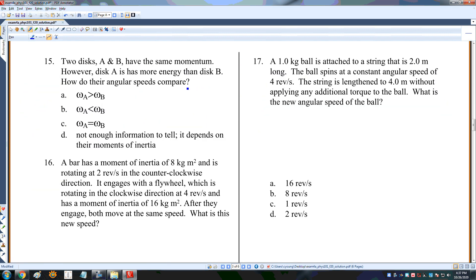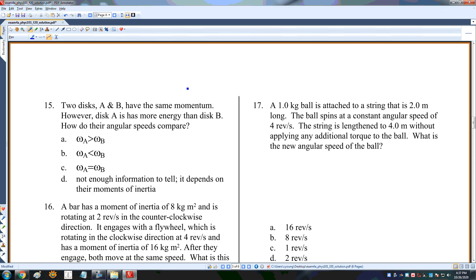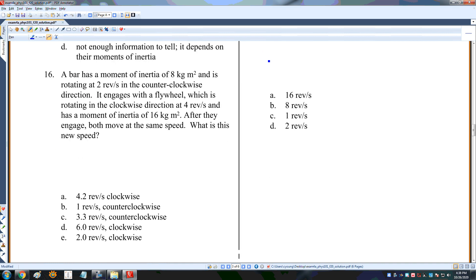Two disks have the same momentum, but disk A has more energy than disk B. How do their speeds compare? Momentum is I omega, and kinetic energy is 1 half I omega squared. Because disk A has more energy than disk B, then disk A has a bigger omega than disk B. Omega A will be bigger than omega B, and it's all key on the squared terms because the energy is more sensitive to the angular velocity. So the one with the bigger energy is the one with the bigger angular velocity.